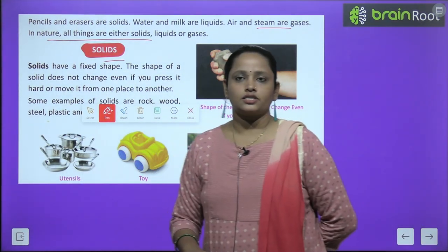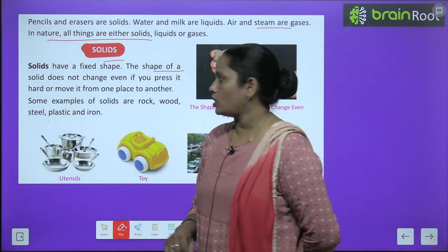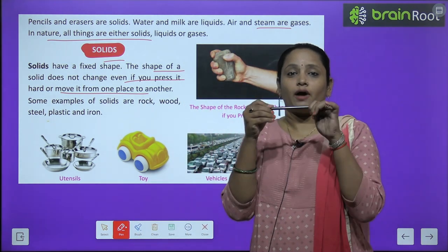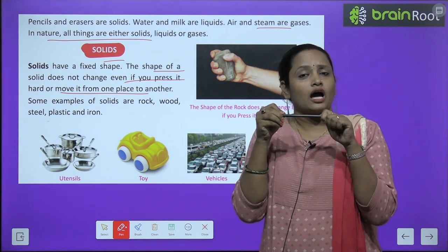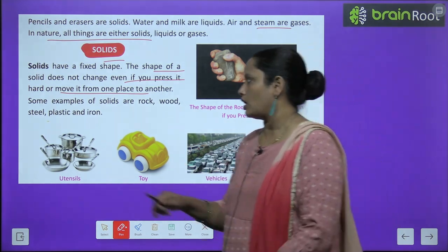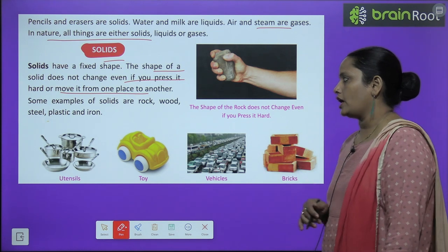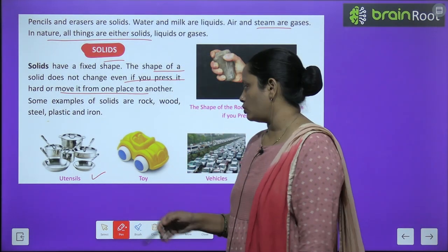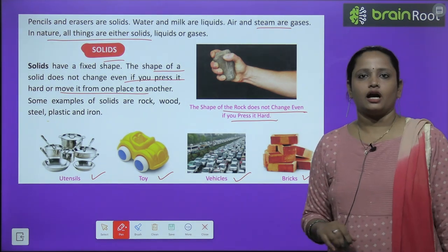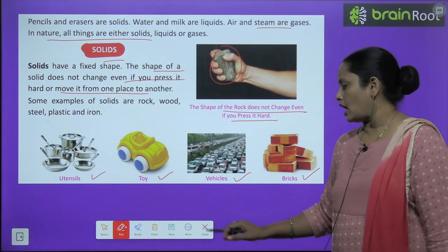Let's learn about solids. Solids have a fixed shape — joh solids hai, unka shape fixed rehta hai, woh change nahi hota. The shape of a solid does not change even if you press it hard or move it from one place to another. For example, I have a pen — kitni bhi takat laga ke dabao, iska shape change nahi hoga. Some examples of solids are rock, wood, steel, plastic and iron. You can also see examples like utensils, buttons, toys, vehicles and bricks. The shape of a rock does not change even if you press it hard.